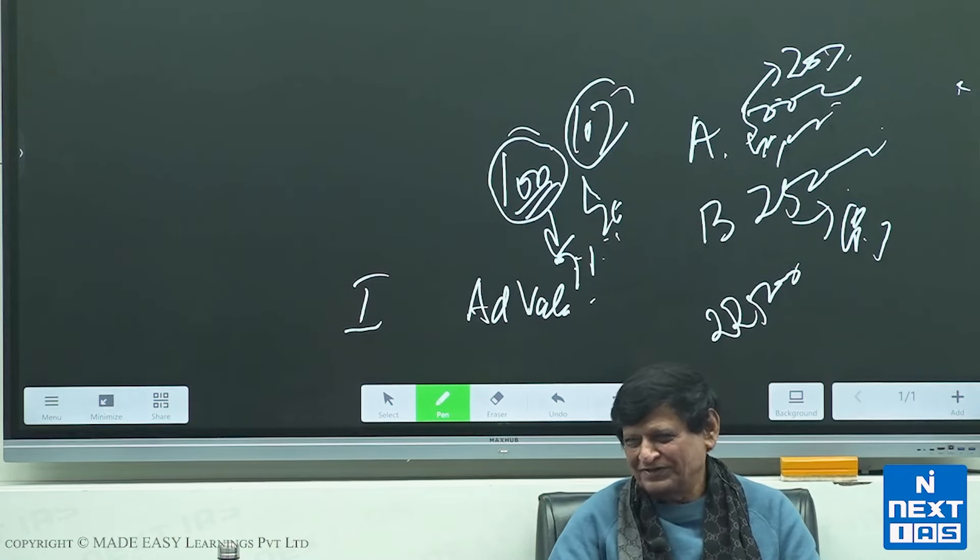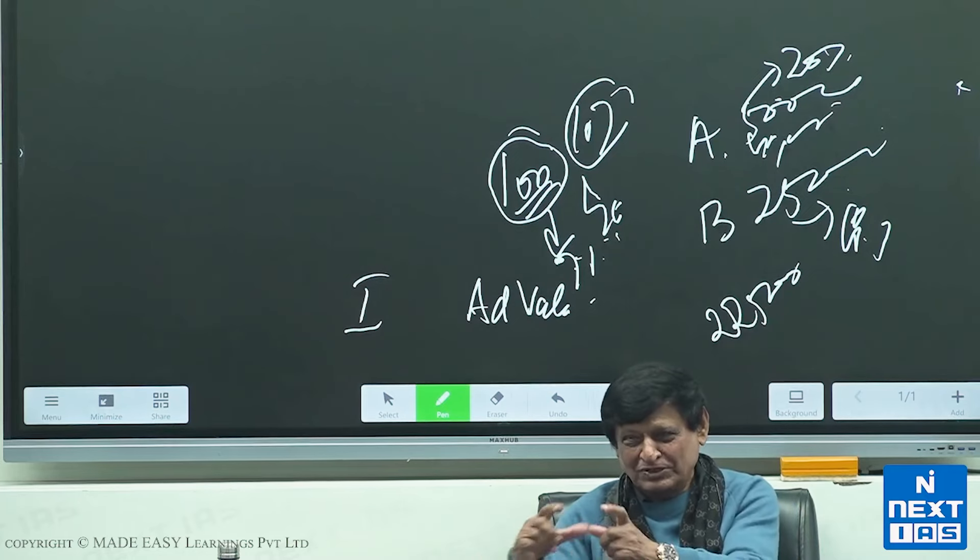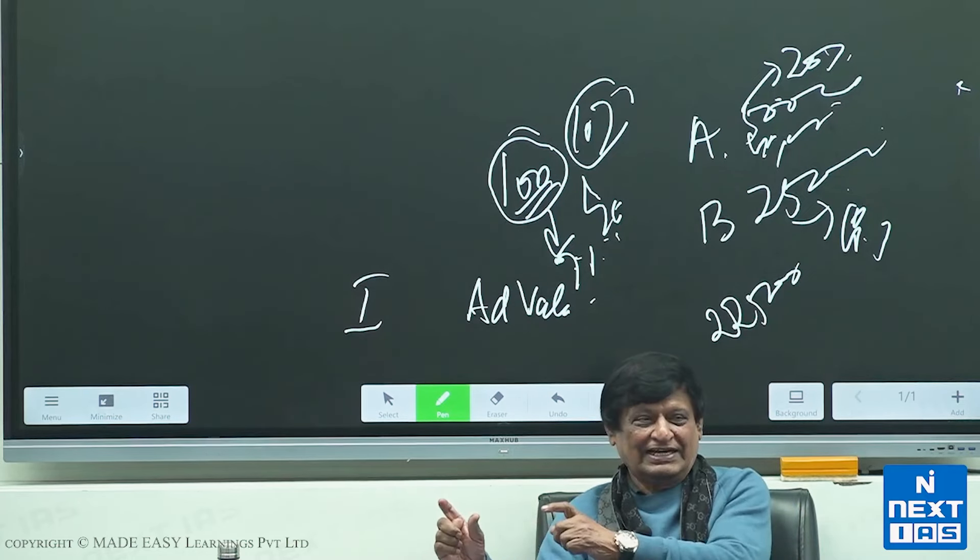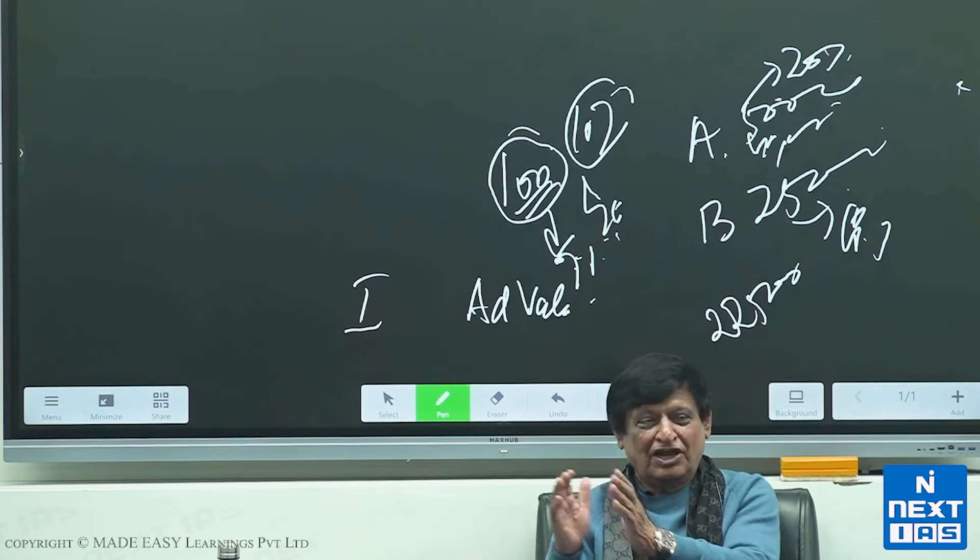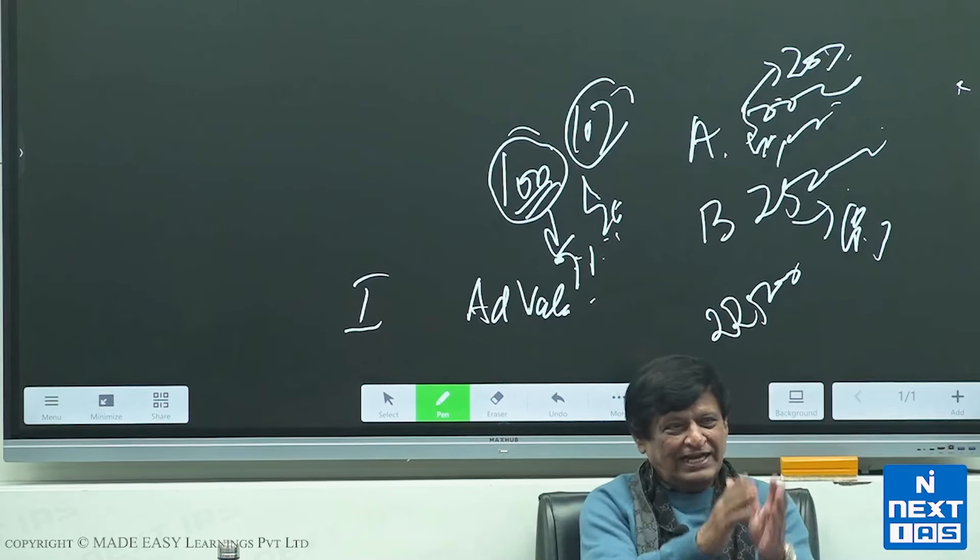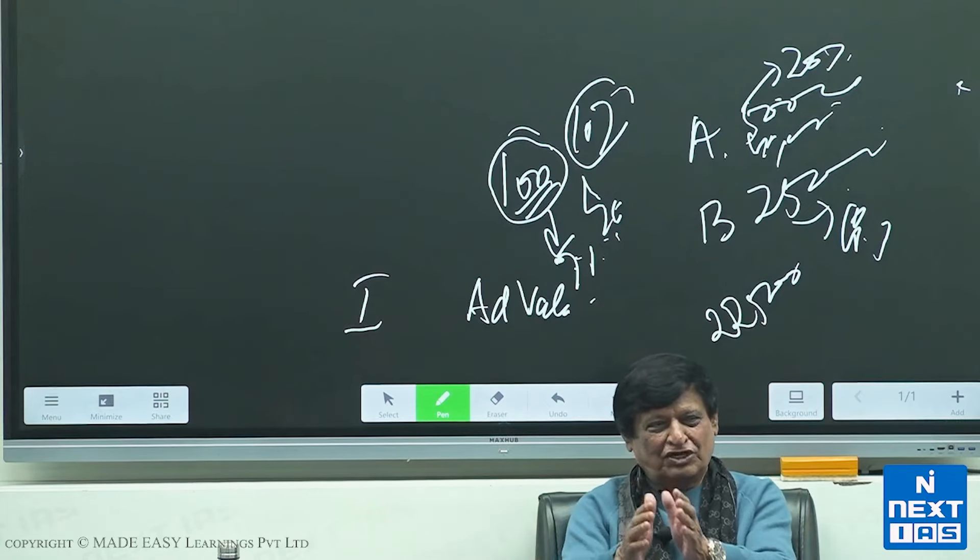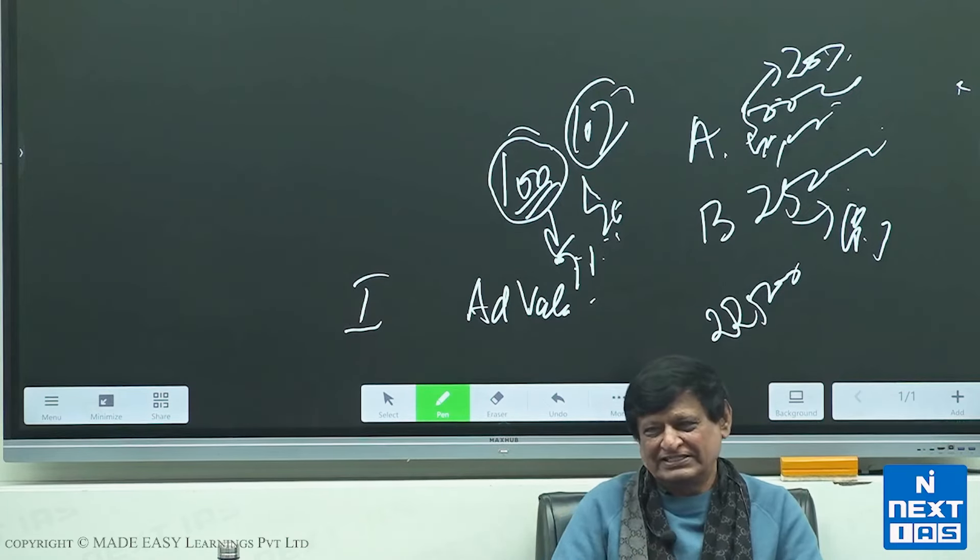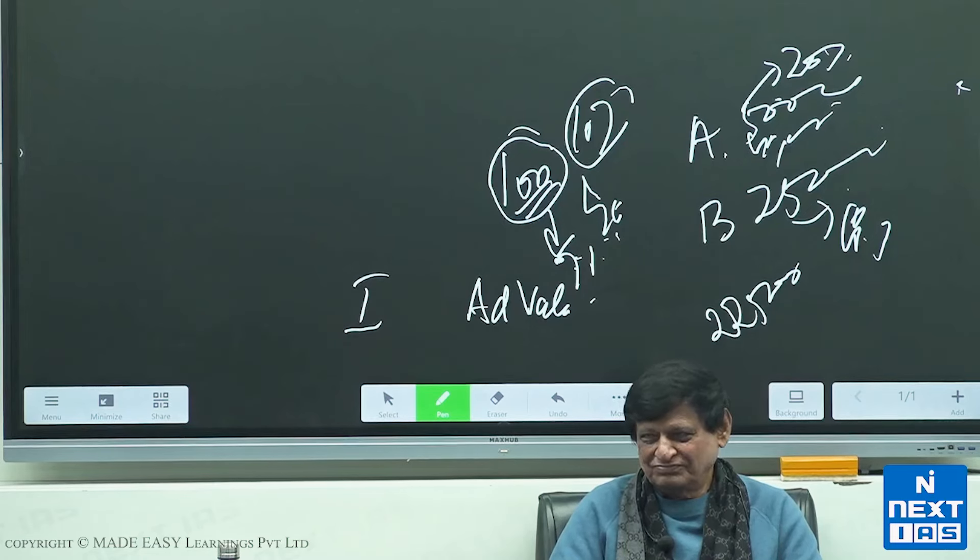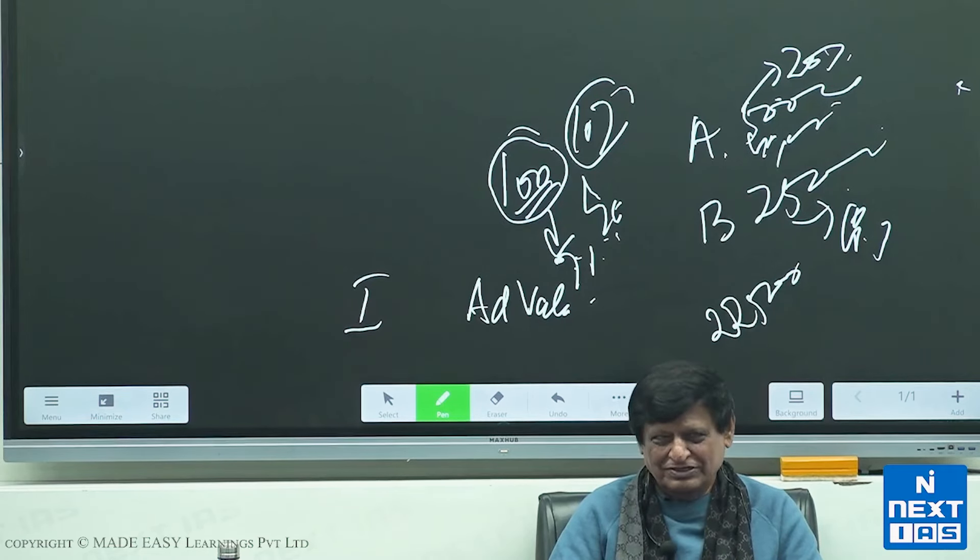Yes or no? So you have progressivity also in indirect taxes, under which luxuries may be taxed at a higher rate than goods of common use and necessities. Yes or no?